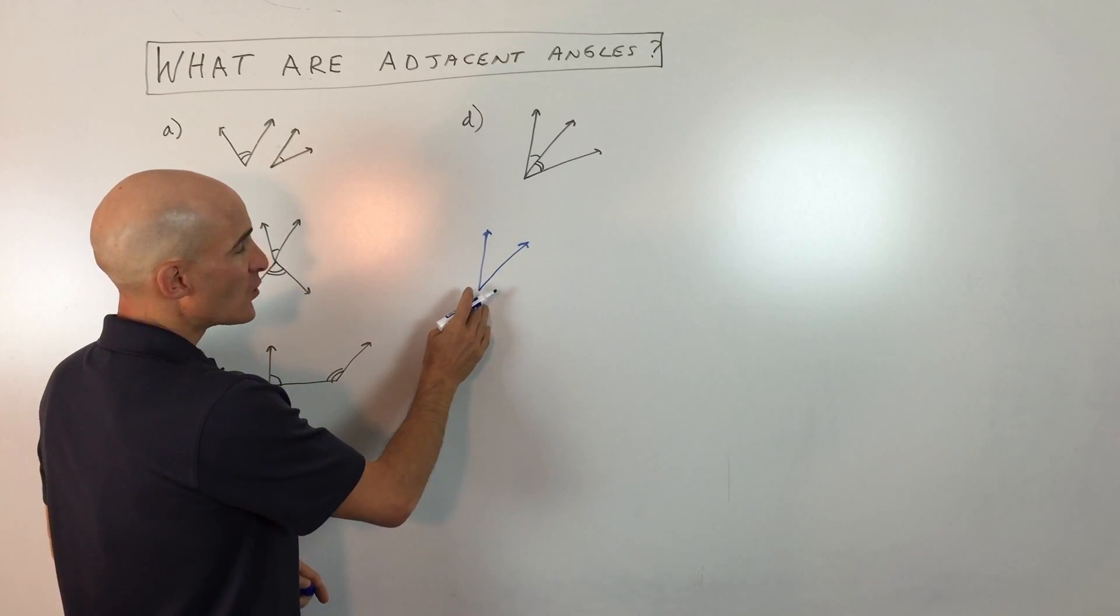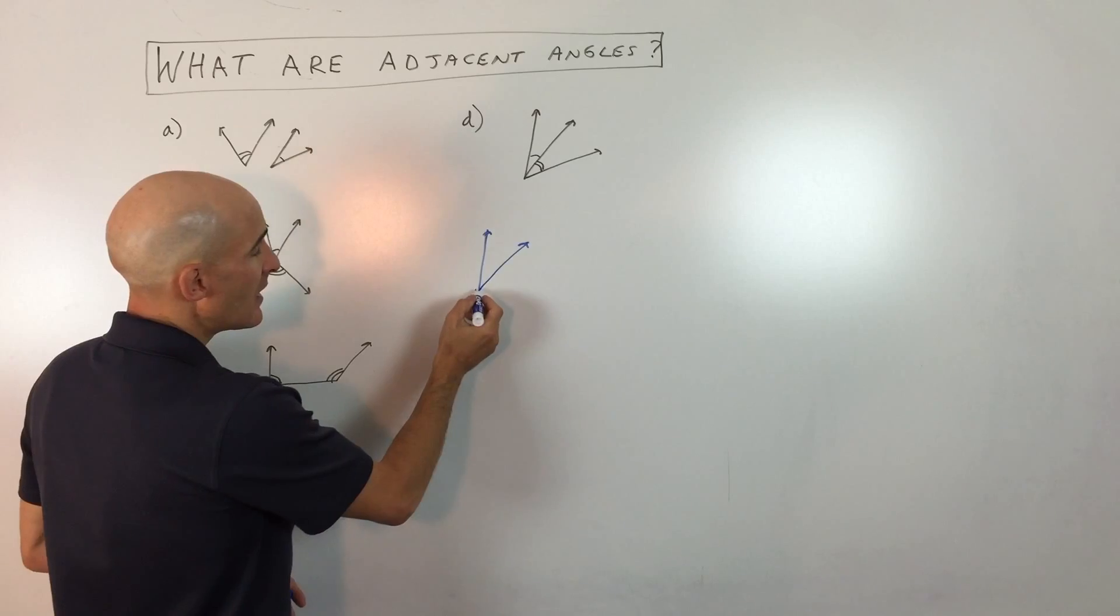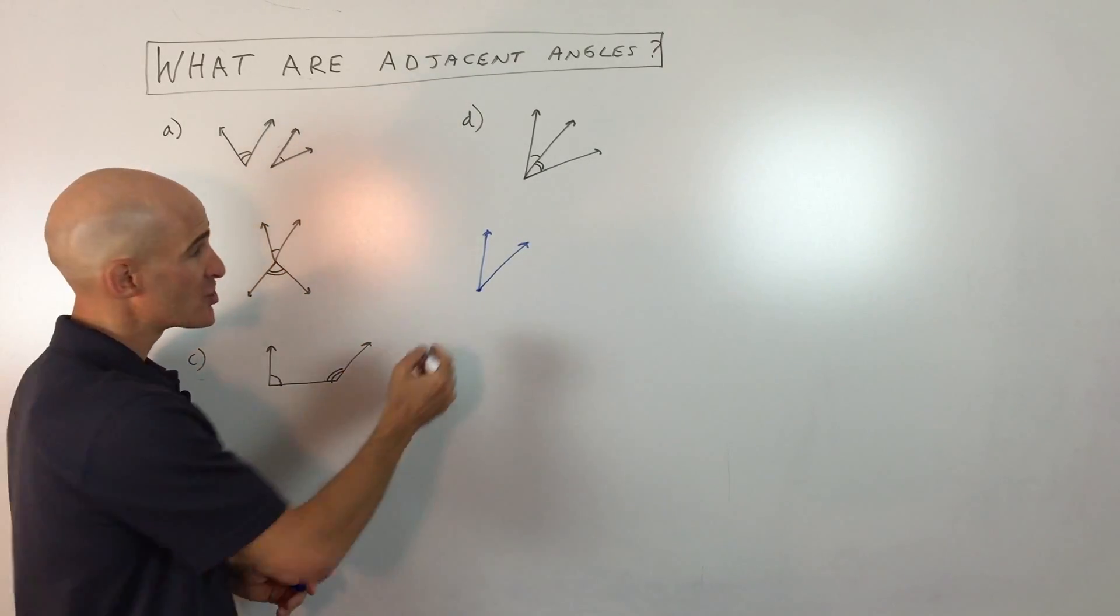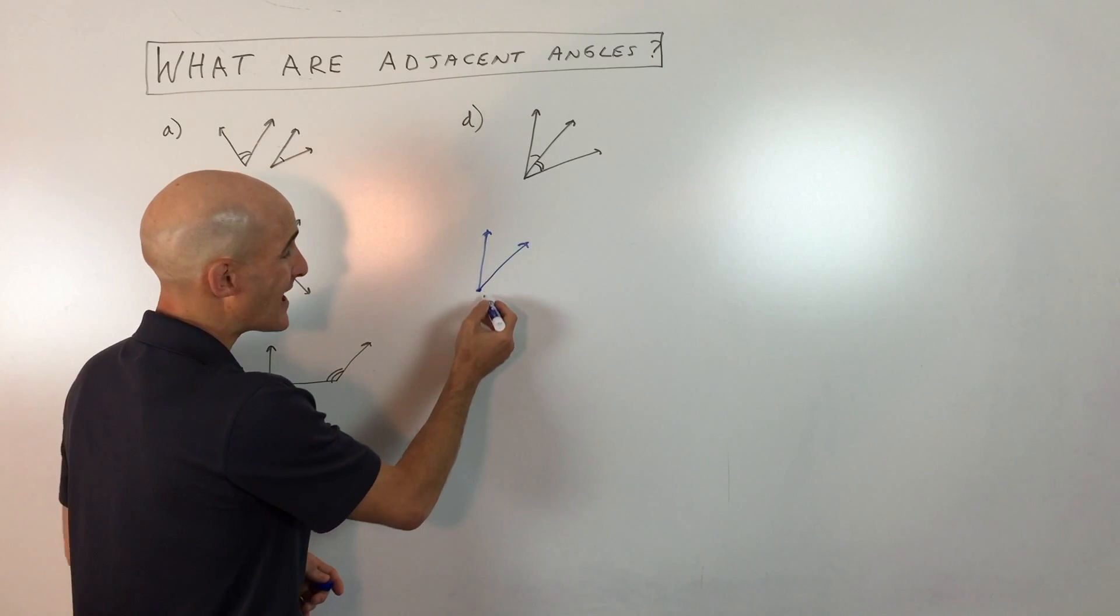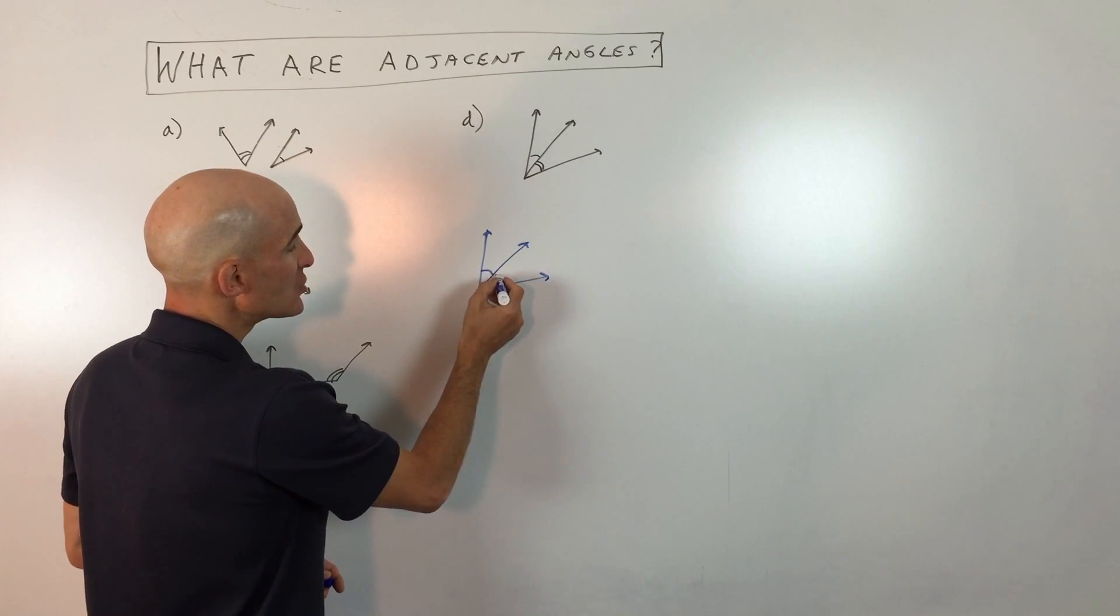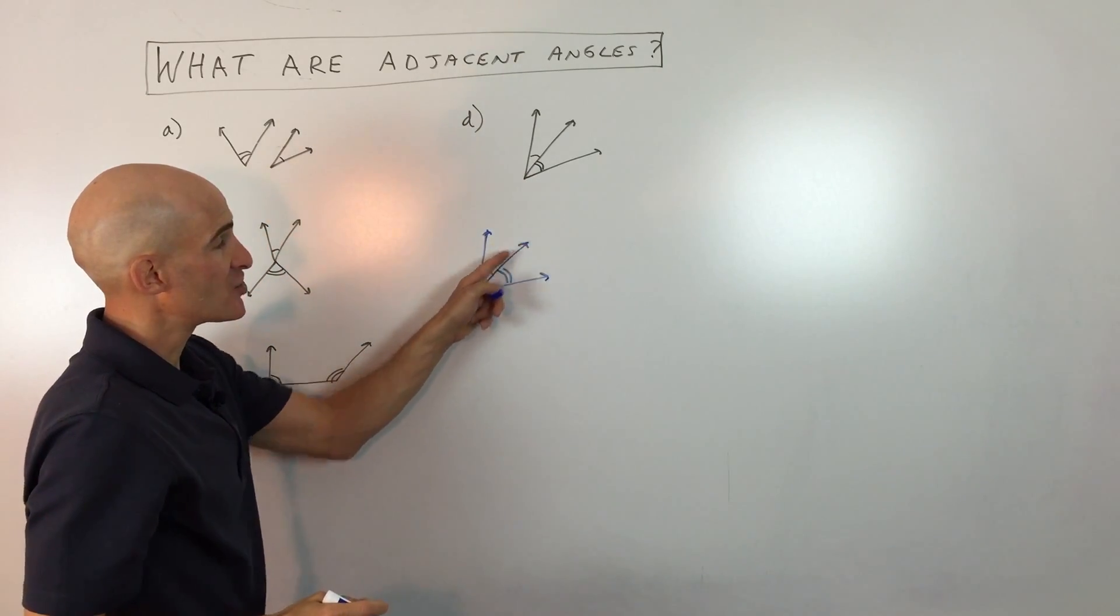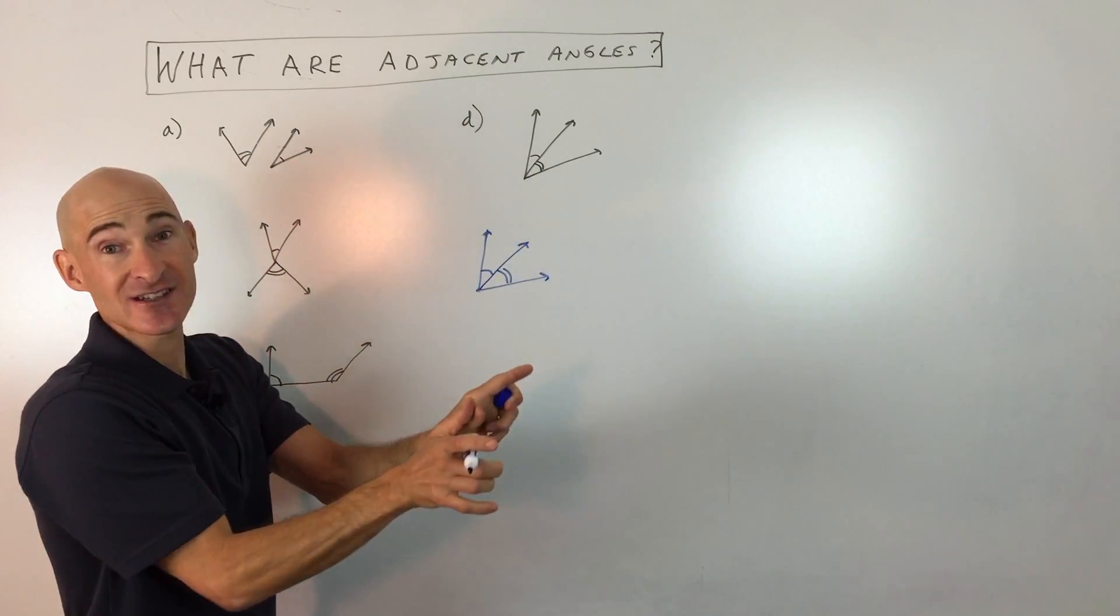But when two angles are adjacent to one another, what it means is that not only do they share that hinge, that vertex, but they also share one of the rays, one of the sides of the angle. So adjacent angles really should look something like this. See letter D? They're sharing that vertex and they're sharing that side and they're next to one another, right?